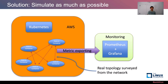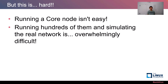Our simulation setup runs everything on AWS using Kubernetes. We put a copy of Core in a Docker container, where each container represents a node in the network. They talk to each other, with the topology derived from the actual network. We export metrics and monitor them using a combination of Prometheus and Grafana. But this is hard — running one core node isn't trivial, and we're talking about running hundreds of them simultaneously while simulating the real network by sending transactions. This can be overwhelmingly difficult.